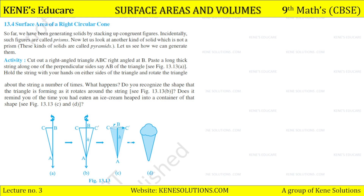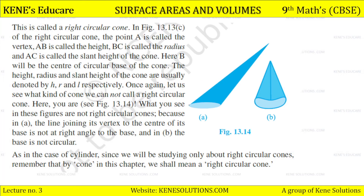So students, here is an activity. Cut out a right-angle triangle ABC, right angle at B. Paste a long thick string along one of the perpendicular sides, say AB of the triangle. Hold the string with your hands on either sides of the triangle and rotate the triangle. What do you get? You get this conical shape. Do you recognize the shape that the triangle is forming as it rotates around the string? Does it remind you of the time you had eaten ice cream? Yes — so we call it the right circular cone.